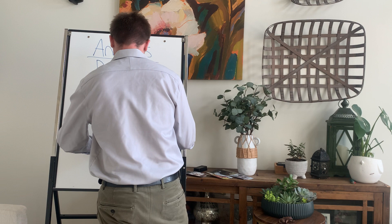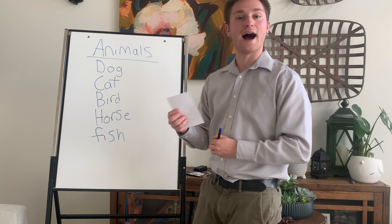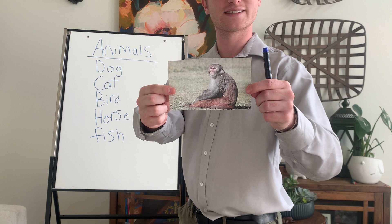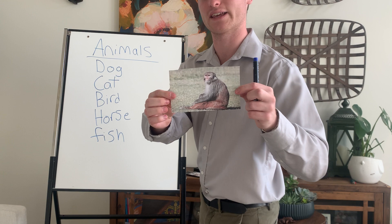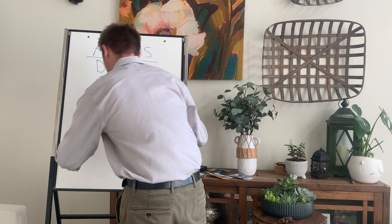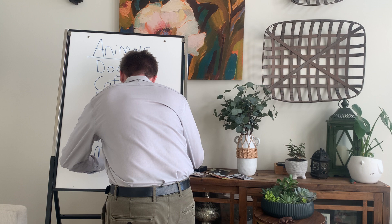And finally, our closest relative as humans to animals is the monkey. This is a monkey — specifically, a rhesus monkey. Very smart. We spell monkey like this: M-O-N-K-E-Y. Monkey.